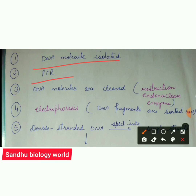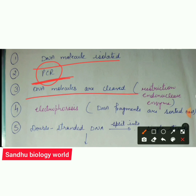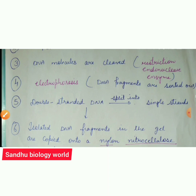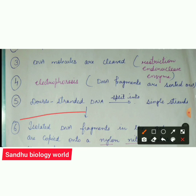PCR — Polymerase Chain Reaction — is used when the amount of DNA available is very small. You cannot perform DNA fingerprinting with too little DNA, so you need a proper amount. If the quantity is insufficient, you use PCR to amplify the DNA and increase its quantity. After that, the DNA is cleaved using a restriction enzyme, which cuts the DNA molecule into many pieces.